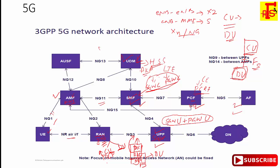The AUSF — Authentication Server Function — performs the authentication functions of the 4G HSS. It implements the EAP authentication server and stores security keys. These are the key facilities of the AUSF.